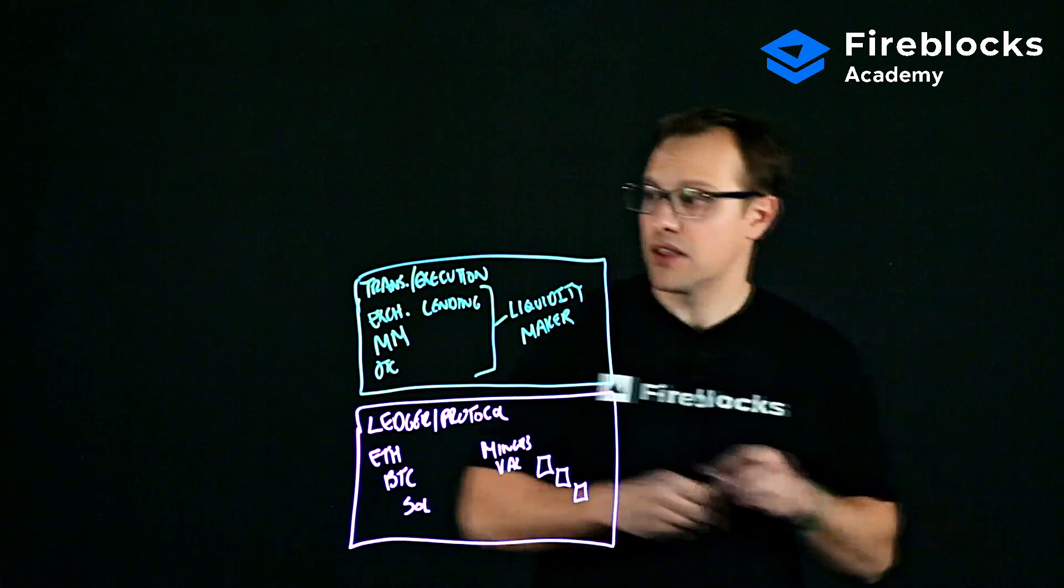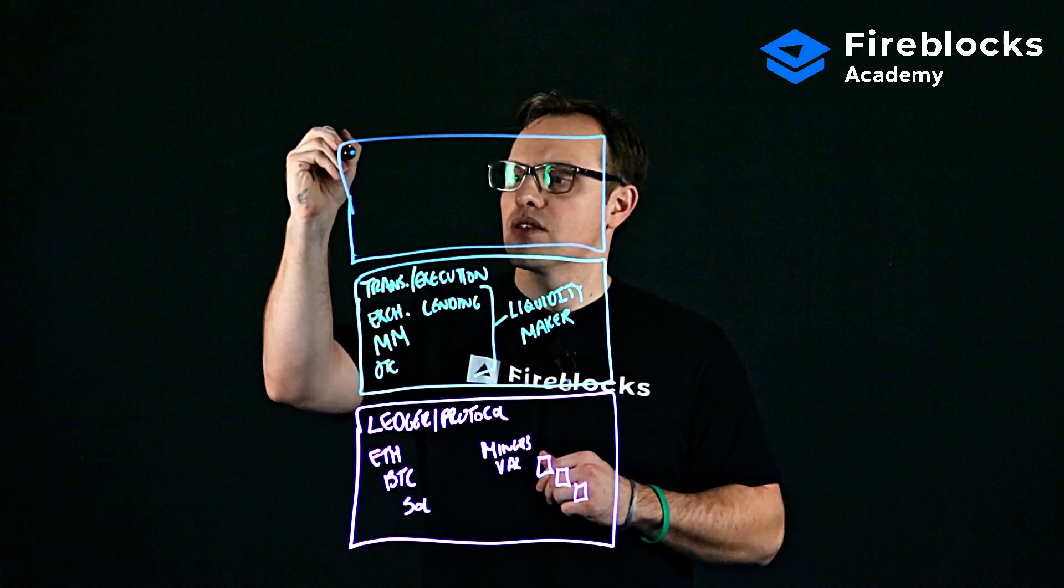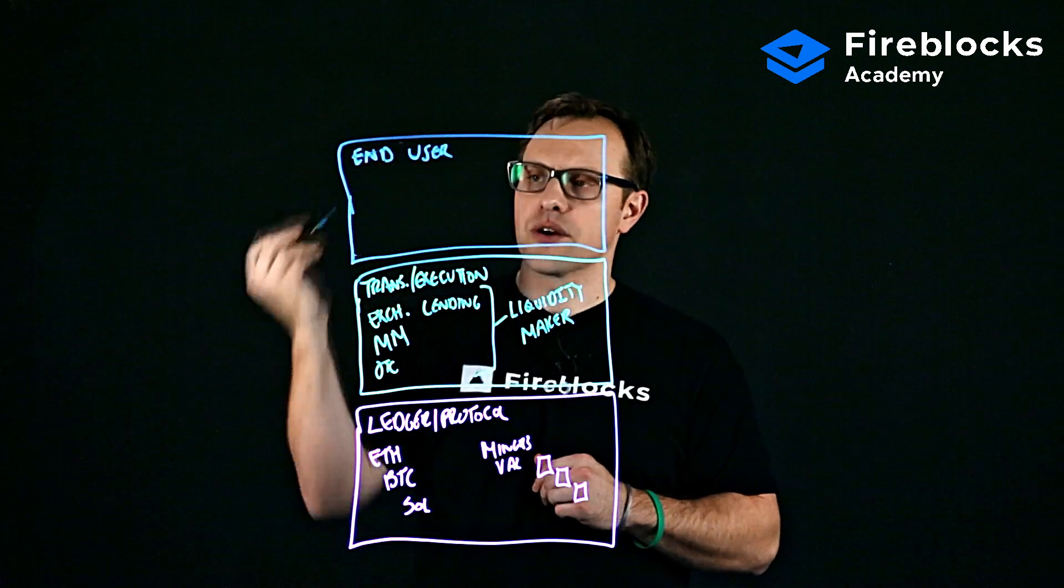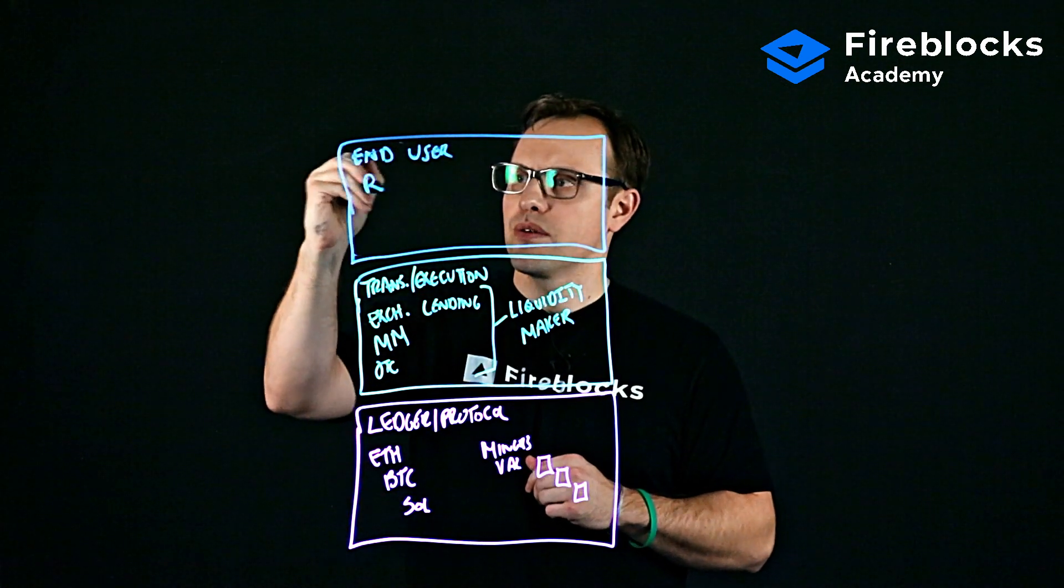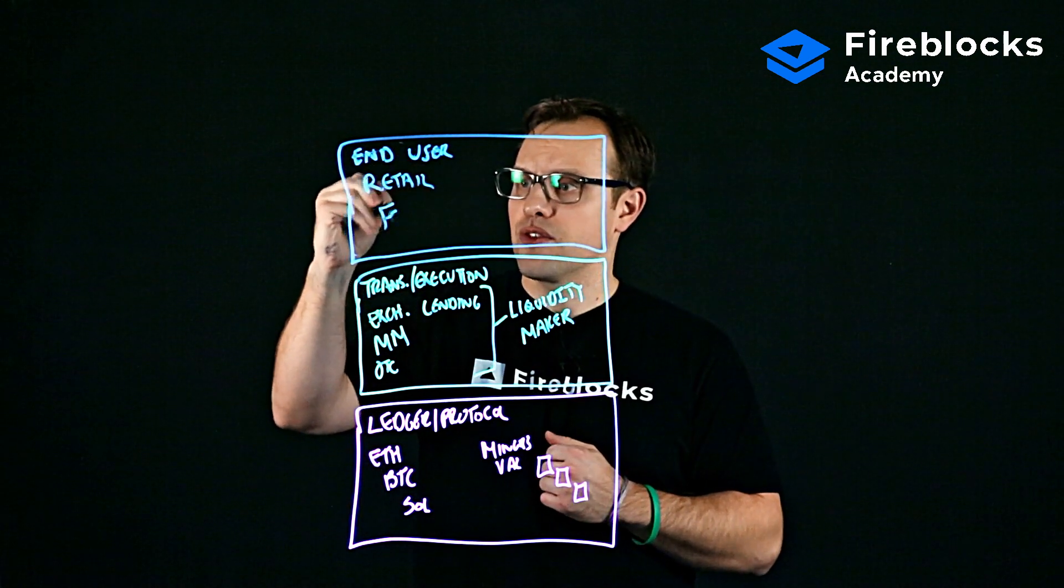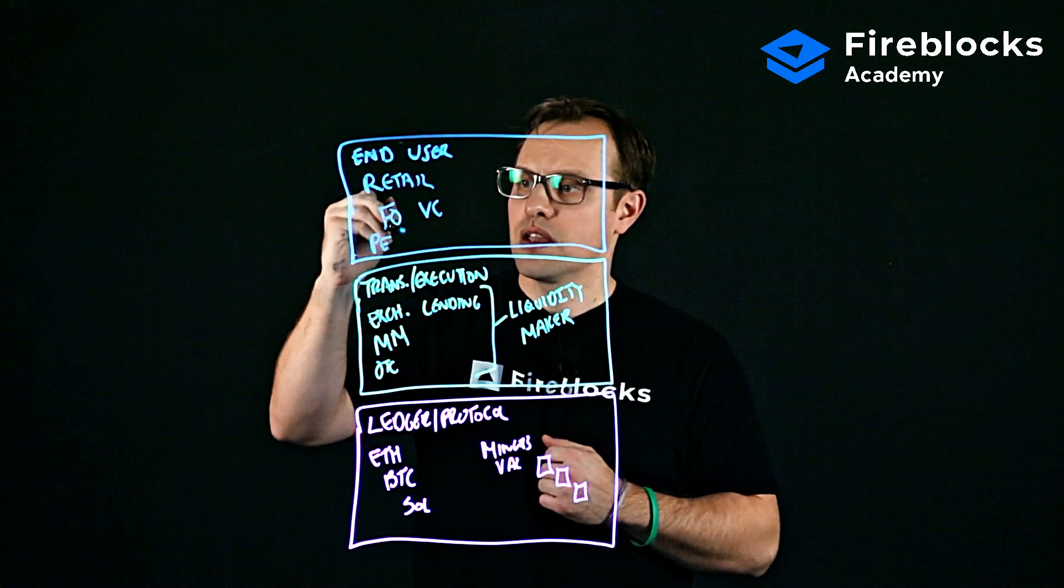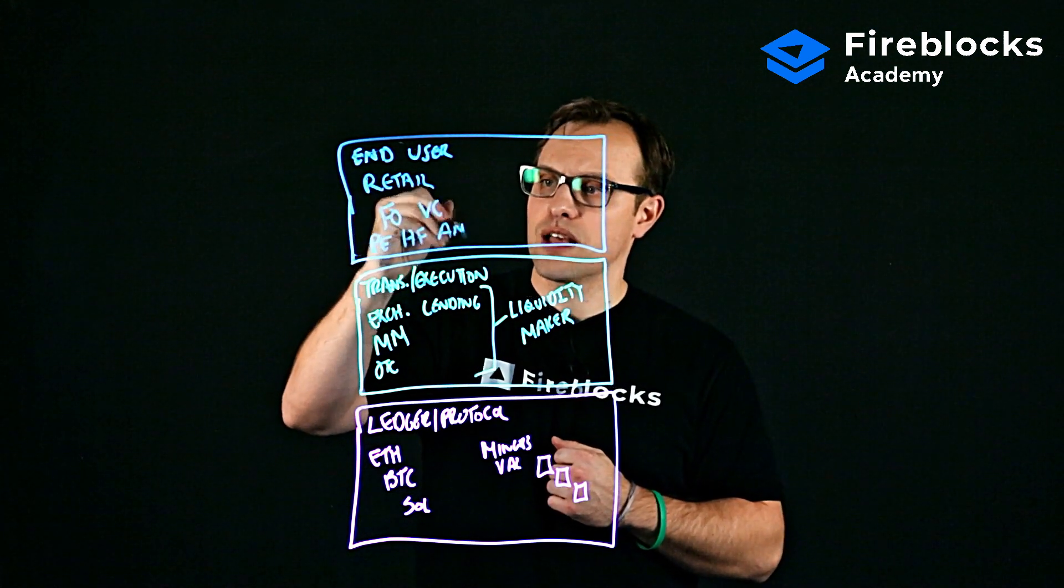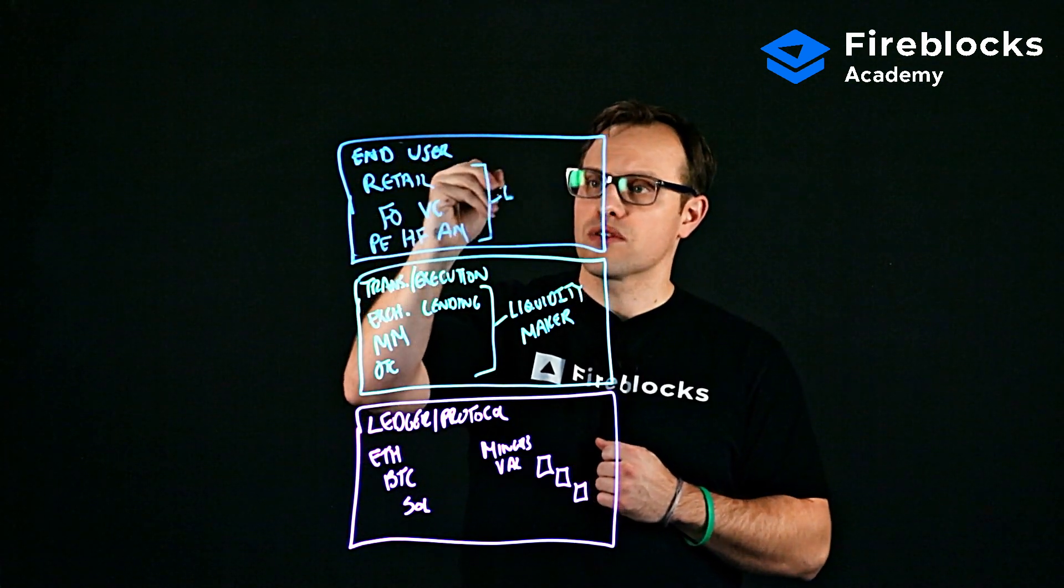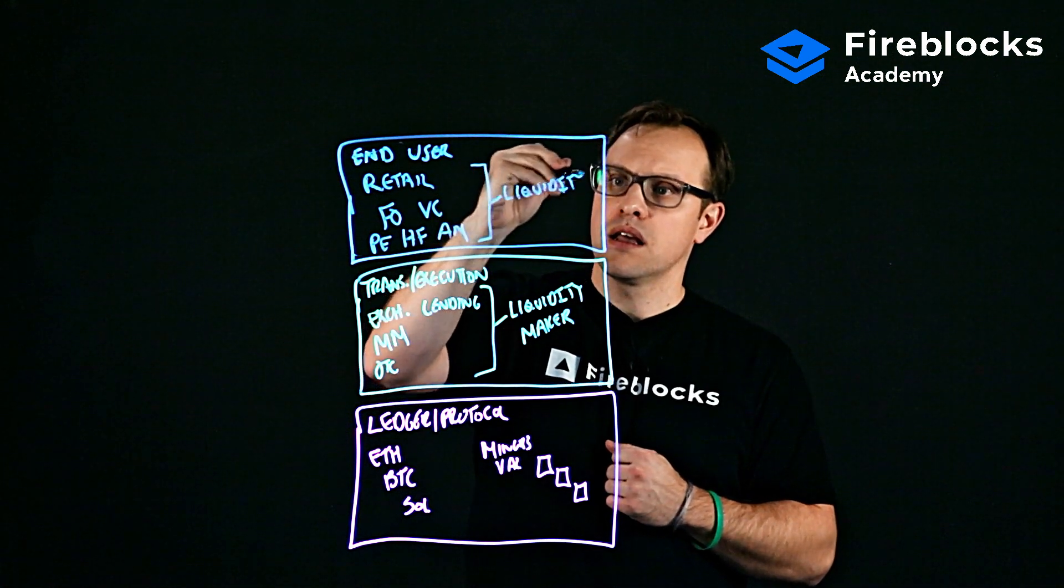The next layer is relatively easy. This is the end user layer. And here, you'll have retail folks like myself or you, you'll have family offices, you'll have venture capital, you'll have private equity, you'll have hedge funds, and you'll have traditional asset managers. Now, the other way to think about this is that these folks are essentially liquidity takers.